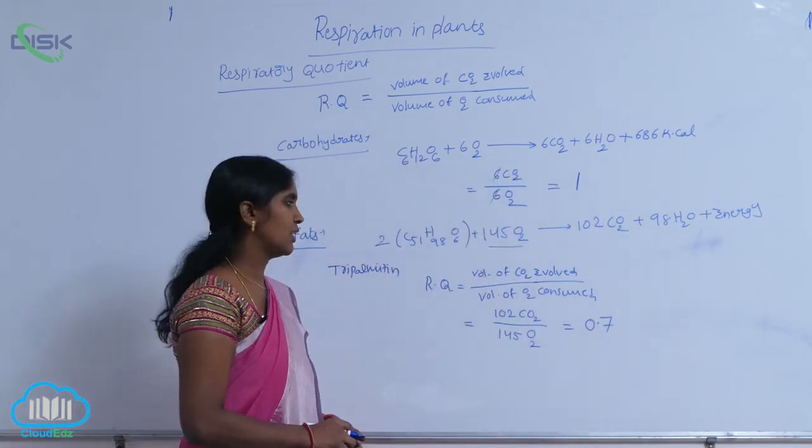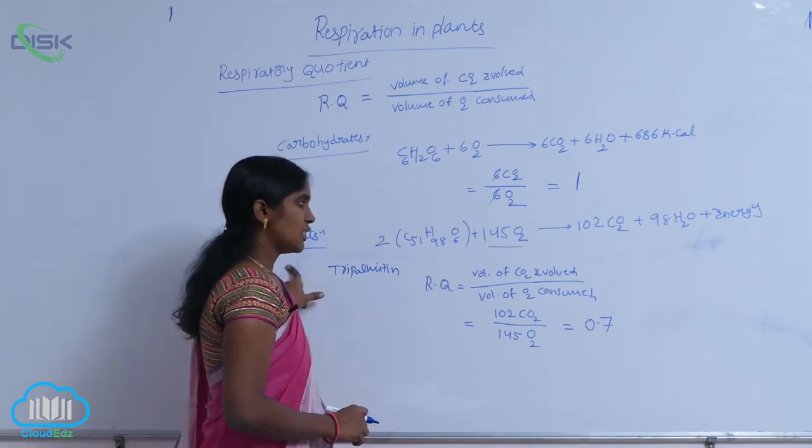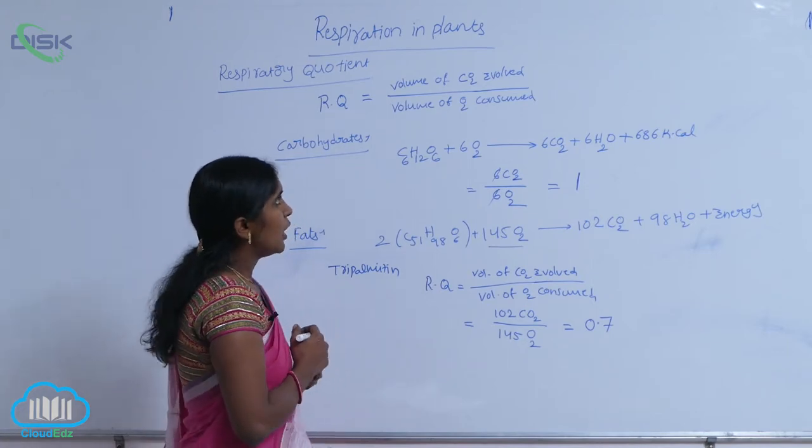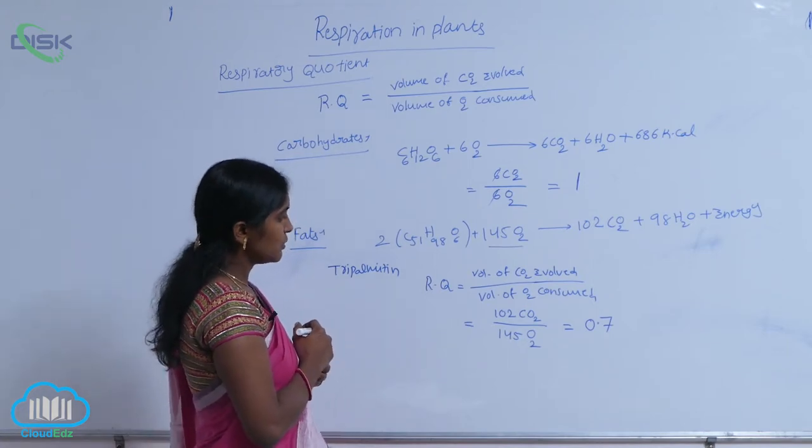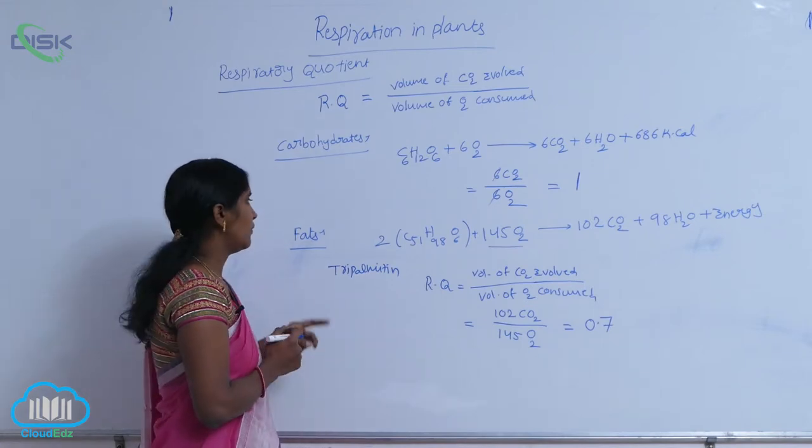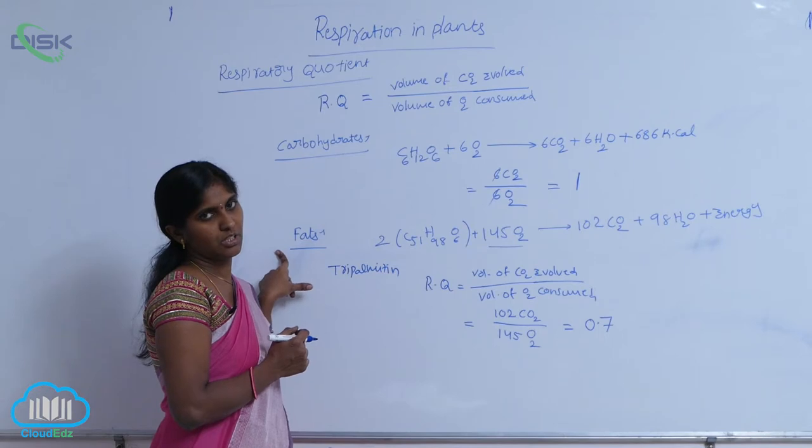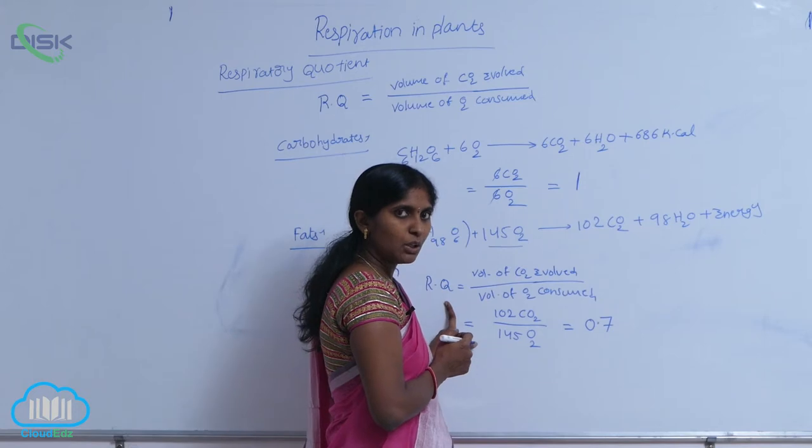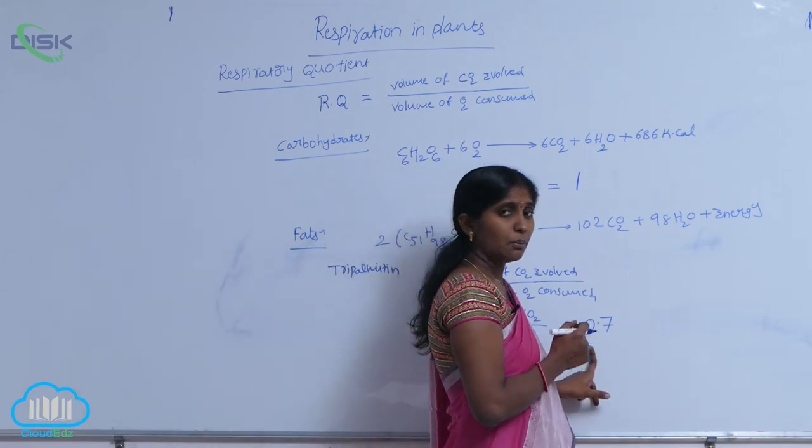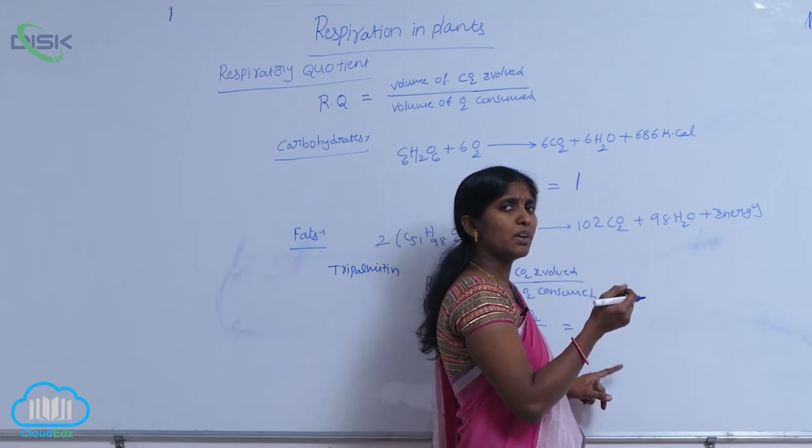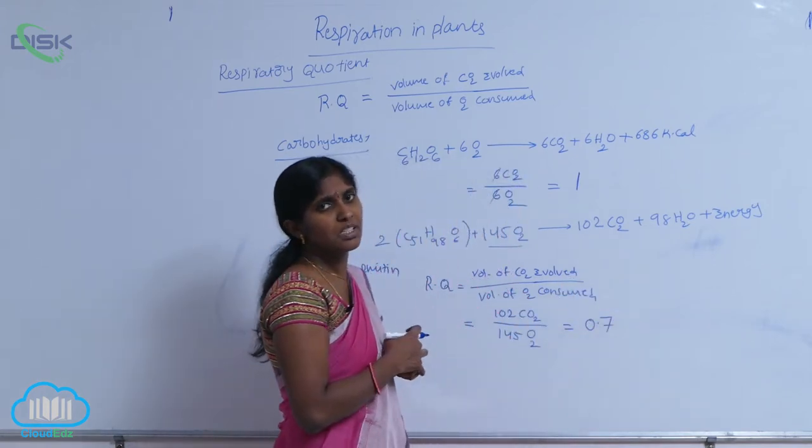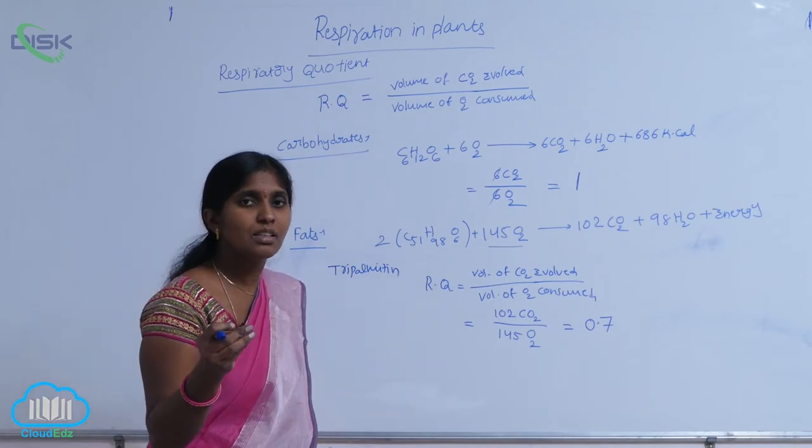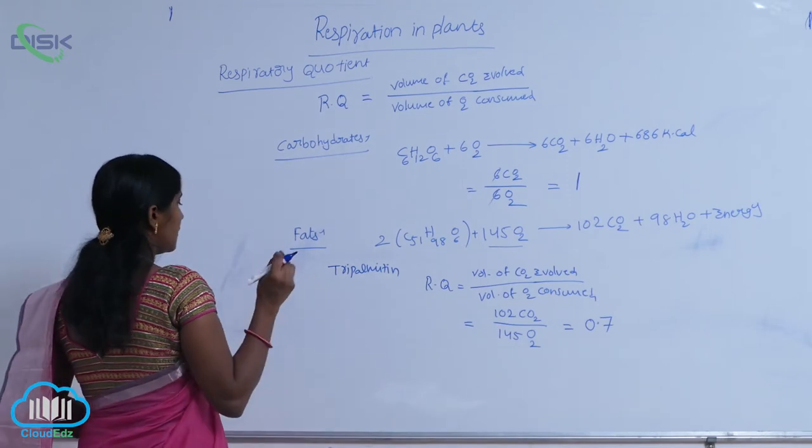It means, when you compare with the carbohydrates, the O2 consumption is more for fats oxidation. That resulted to respiratory quotient value decreased. It means, below 1, that is equal to 0.7. So, 0.7 respiratory quotient shows the respiratory substrate as lipids or fats.